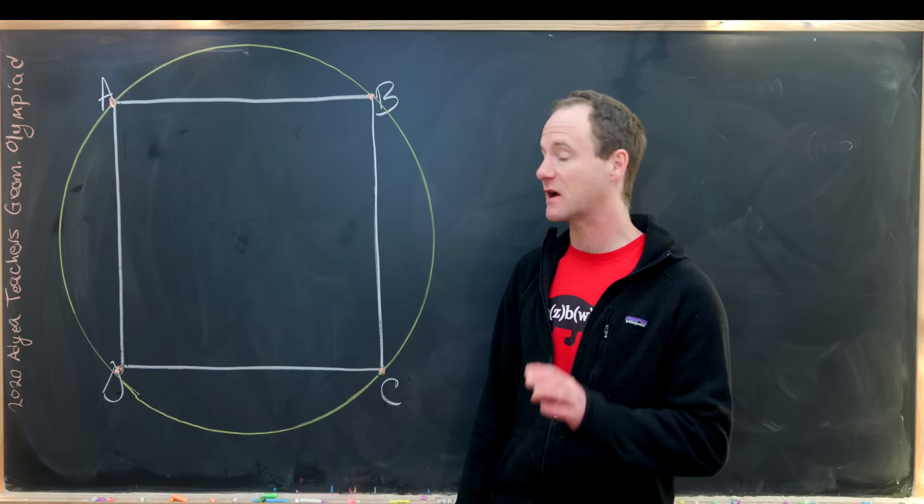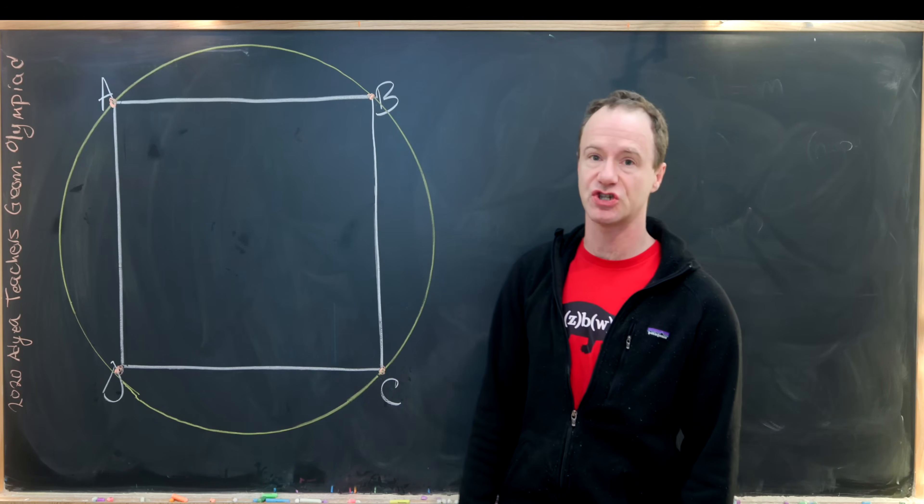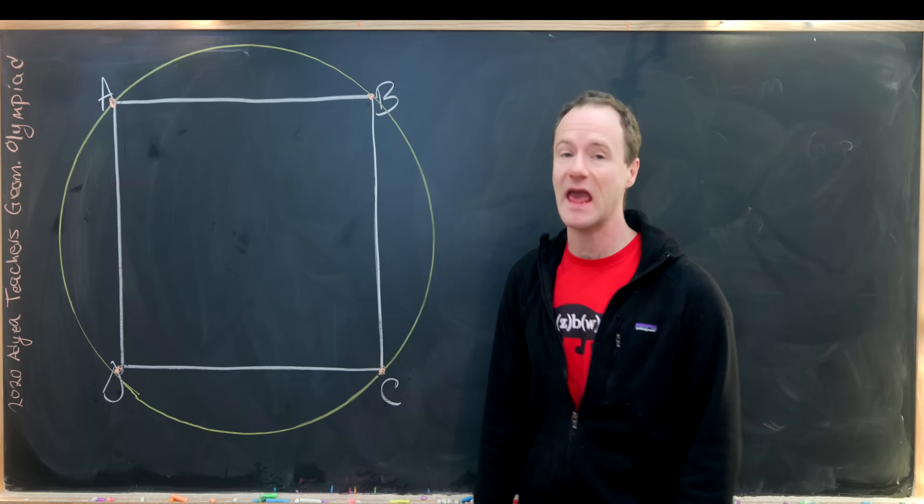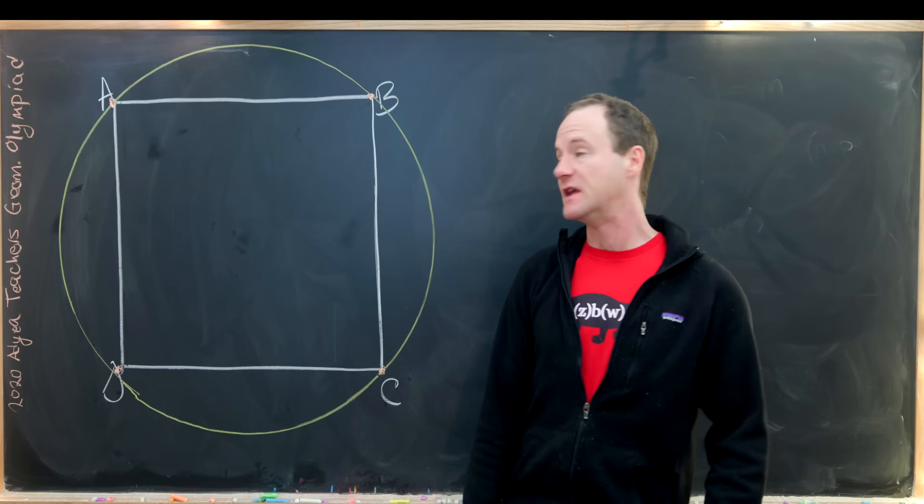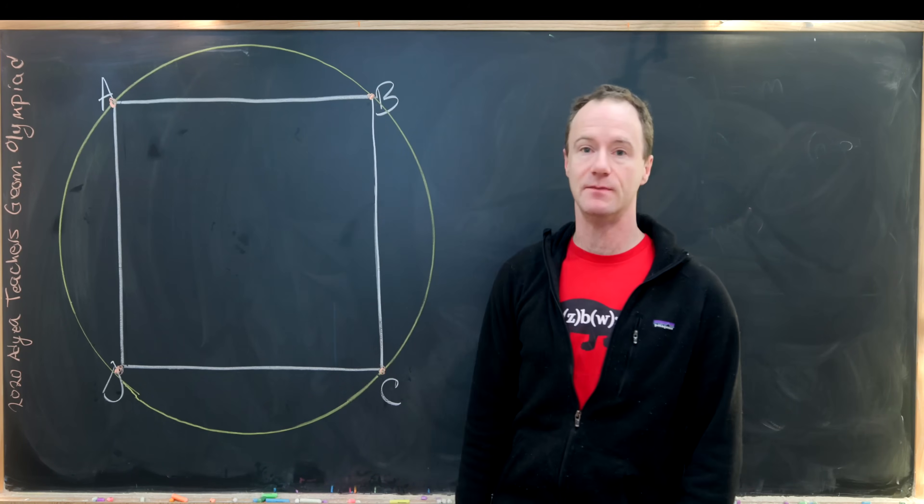Next we want to pick four points and I'll call them E, F, G, H. E and F will be along this side length AB. And then G and H will be along this smaller arc AB.